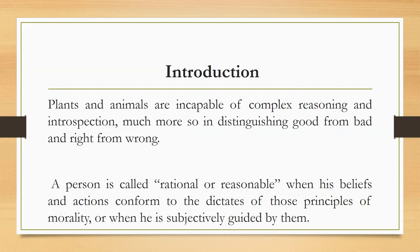Because plants and animals do not have the rational soul, only human beings do. The absence of the rational soul in plants and animals disables them from distinguishing good from bad or right from wrong actions. For example, no dog you scold will argue back or reason with you, and a plant, no matter how long you talk to it, will not respond or complain.